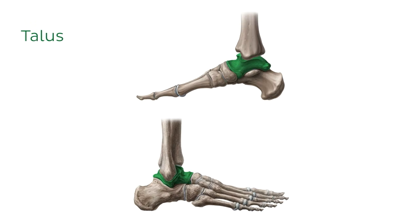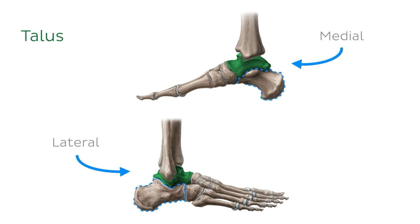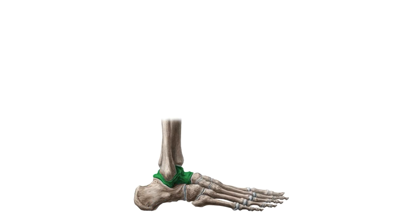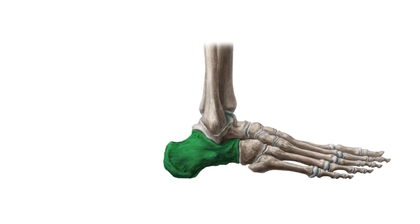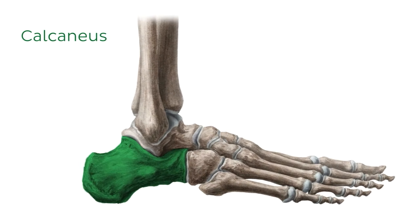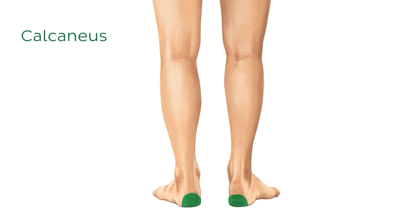In both a medial view and a lateral view of the foot, we can see the talus highlighted in green. It spans the width of the ankle joint and sits superior to the calcaneus. Looking at this lateral image of the foot, we can see the calcaneus sitting inferior to the talus. The calcaneus is the heel bone. It does not form part of the ankle joint itself, but important ligaments supporting the ankle joint attach to the calcaneus.